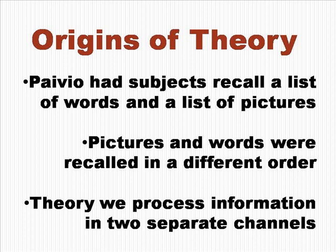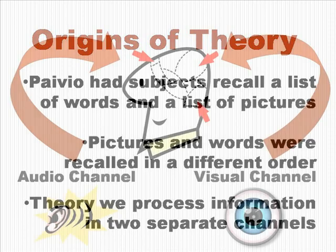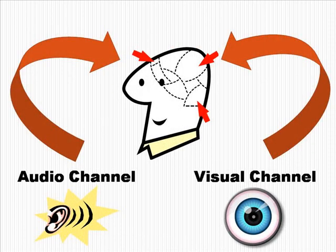He found that people remembered these things in much different ways. As they were collecting the data, he began to realize that a logical interpretation was that people process information in two separate channels — an audio channel and a visual channel.